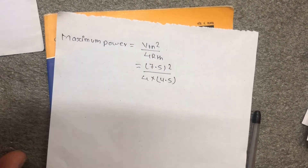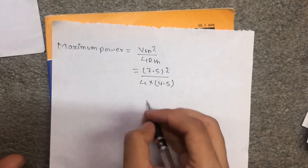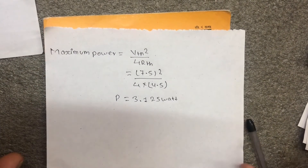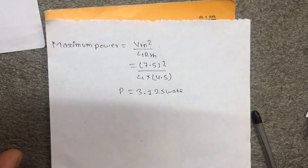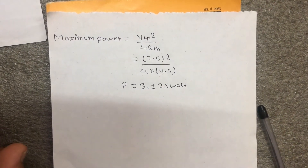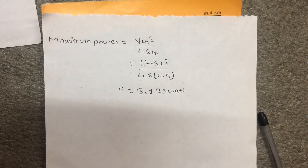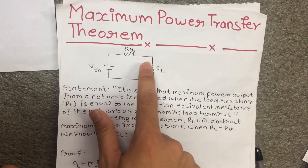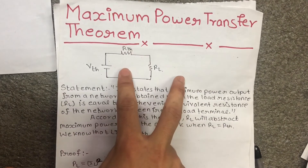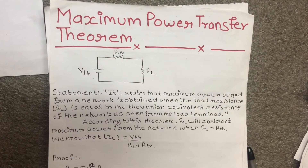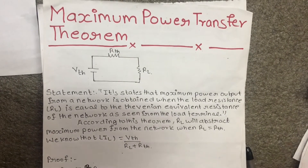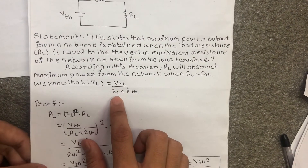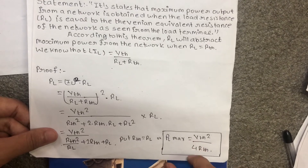Calculating 7.5 squared divided by 18 gives 3.125 watts. So maximum power equals 3.125 watts. This is a simple application of Maximum Power Transfer Theorem. The key steps were: find Vth, find Rth, set RL equal to Rth, and use the formula Pmax equals Vth squared divided by 4Rth. The current formula is Vth divided by (RL plus Rth).